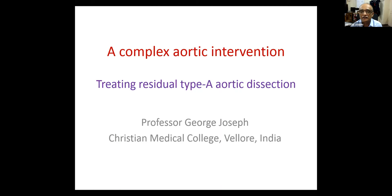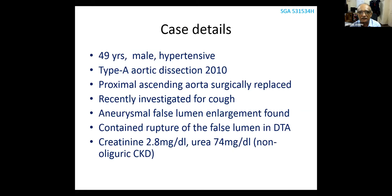The patient came to us last year. At that time he was 49 years old. He was hypertensive, and 10 years ago, in 2010, he had a type A aortic dissection for which he underwent surgical replacement of the proximal ascending aorta. Thereafter he was asymptomatic and not following up anywhere. Recently he developed a cough, a CT angiogram was done, and they found the false lumen of the aorta had enlarged aneurysmally, with a contained rupture of the false lumen in the descending thoracic aorta. He also has chronic kidney disease, with a creatinine of 2.8 mg/dL.